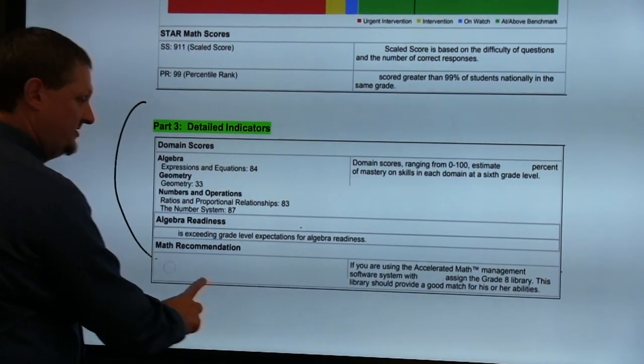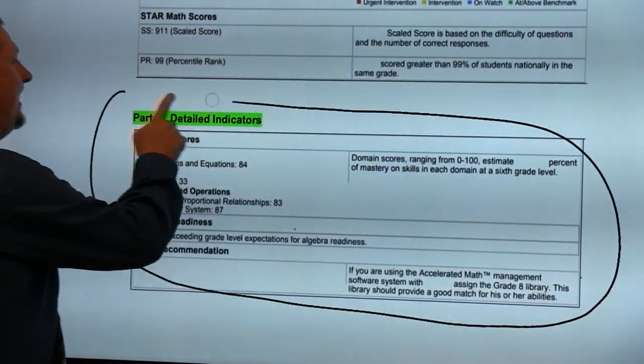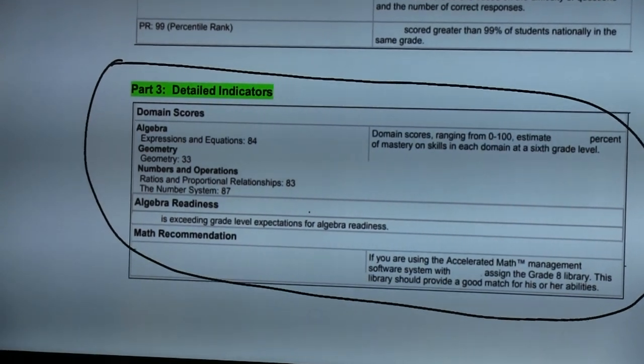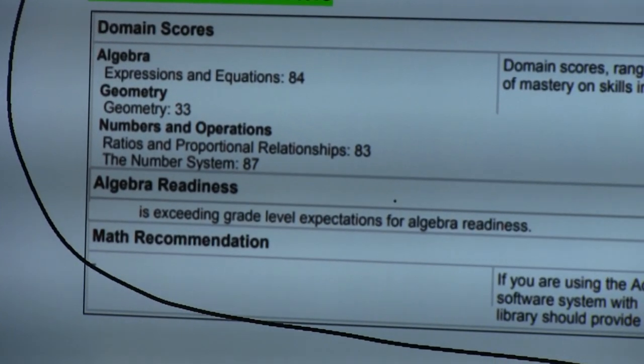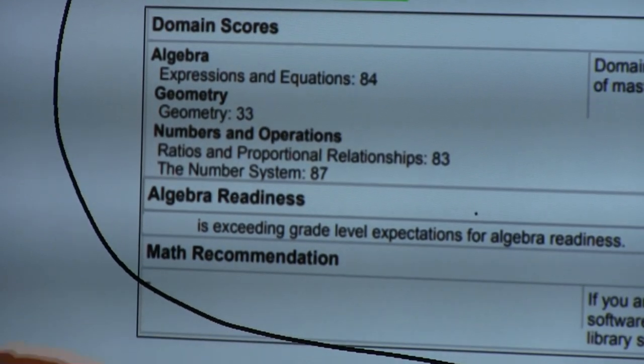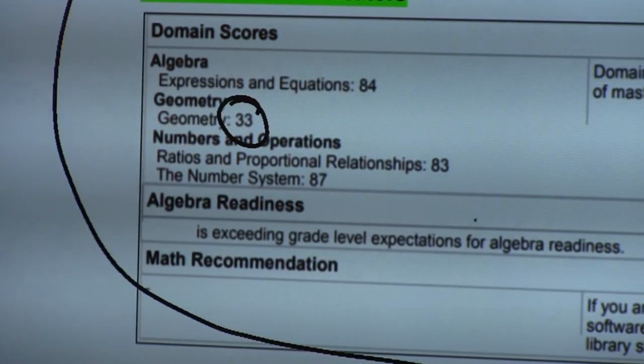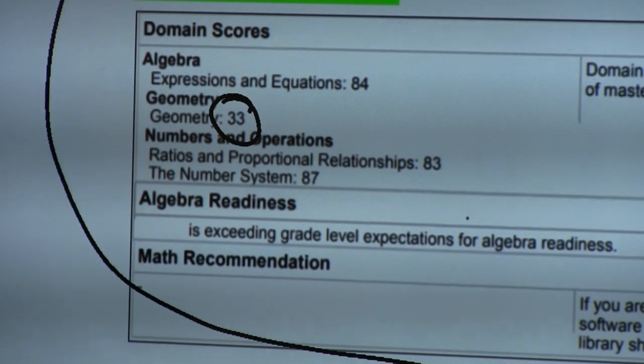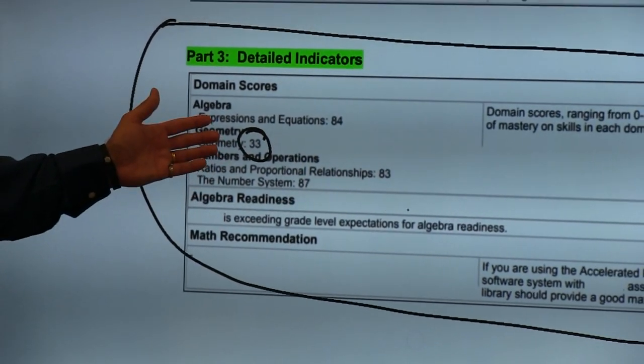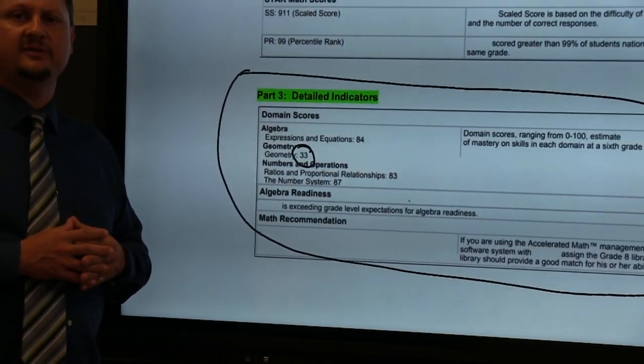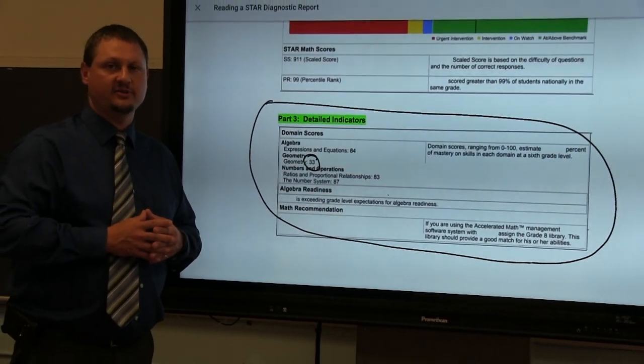Even though we know from above that this student scored in the 99th percentile in mathematics we can look at their sub domains and we can see that they still have areas that they can work to improve. So despite the fact that this student when compared with their peers nationally scored in the 99th percentile we can see that there's a relative weakness in geometry. Now there are many reasons for that in terms of the way curriculums are designed and the way that things are ordered throughout a school year but that's an area of enrichment that we could work on with this student as we individualize their instruction.